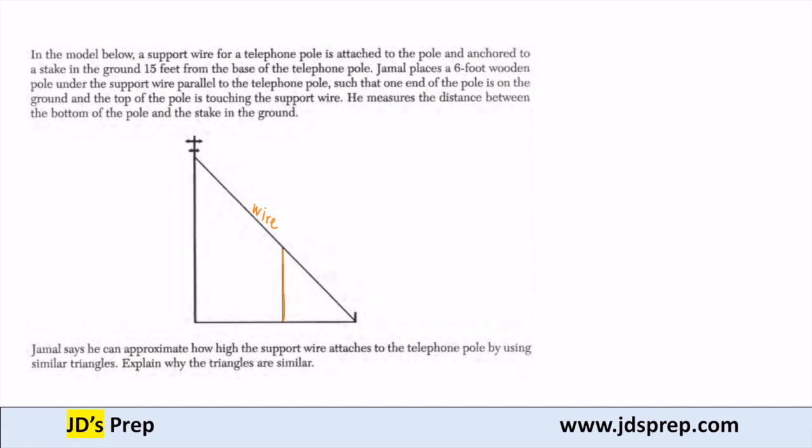So let's put the top of our telephone pole to be C, the top of this support pole D, and our stake at A. We'll put the bottom of the support pole at E, and the bottom of the telephone pole at B.